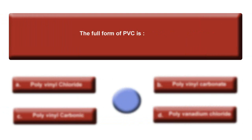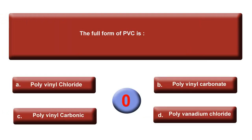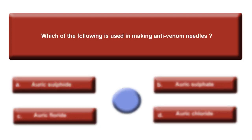Next question: The full form of PVC is — Option A: Polyvinyl Chloride. Option B: Polyvinyl Carbonate. Option C: Polyvinyl Carbonic. Option D: Poly Vanadium Chloride. Time is up. The answer is A, Polyvinyl Chloride.